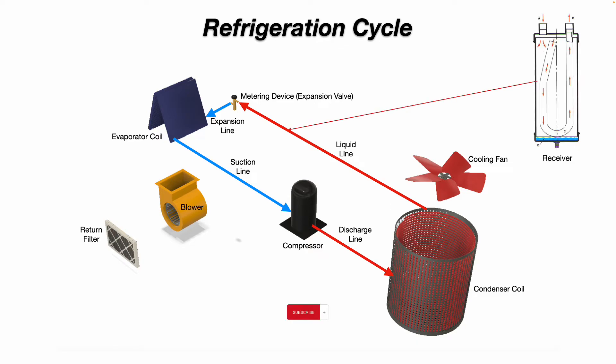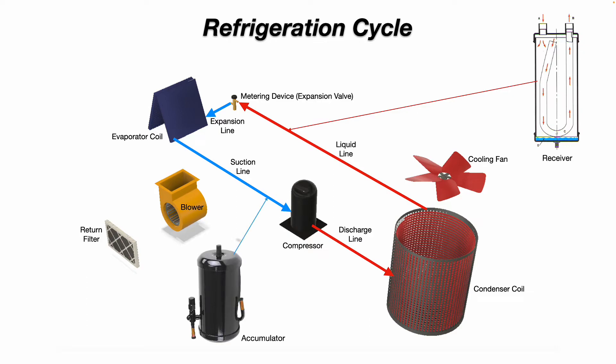A few things to note: sometimes you may see a liquid line receiver, and sometimes you might see an accumulator just before the compressor — usually on a heat pump or on different types of refrigeration systems. Not so much on regular typical residential systems.